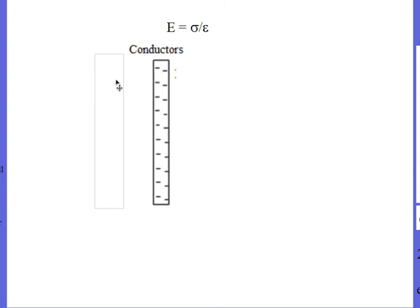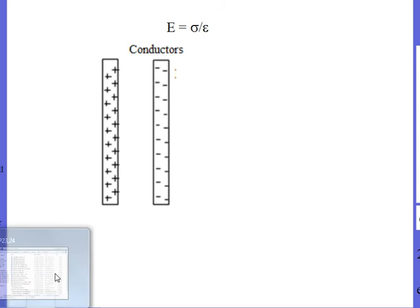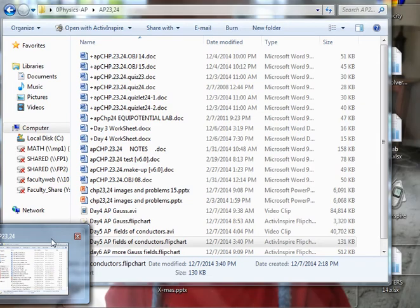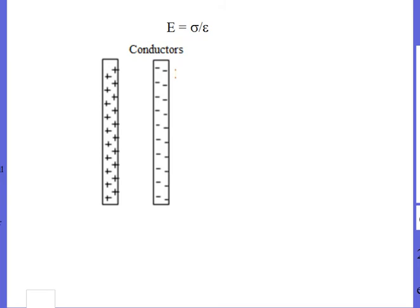This says conductors. And in fact, I have two of them. I have two conductors. Each one would have a field, a uniform field, with field strength sigma over epsilon. But what about when you put the two of them together? What happens to the field? And this is not a matter of superimposing the field.